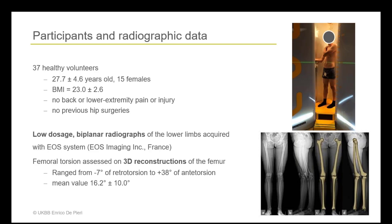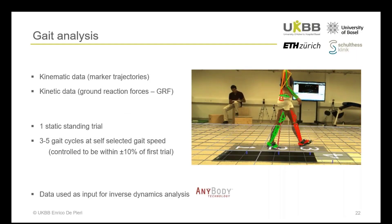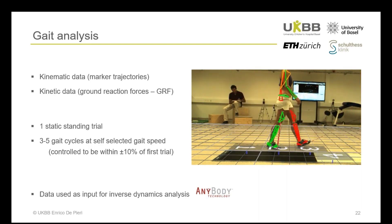In order to answer these questions, we built personalized musculoskeletal models based on subject-specific motion capture and radiographic data. We recruited 37 healthy volunteers who did not present any back or lower extremity pain or injury, nor a history of previous hip surgeries. We acquired low-dosage biplanar radiographs of the lower limb with the EOS system and assessed their femoral torsion based on the three-dimensional reconstruction of their femur. In this cohort, femoral torsion values ranged from 7 degrees of retrotorsion to 38 degrees of antitorsion, with a mean value of 16 degrees.